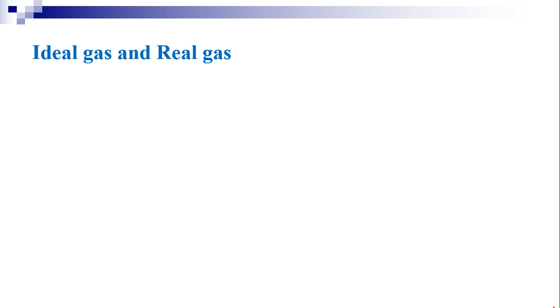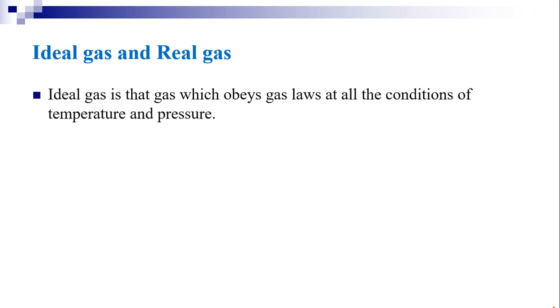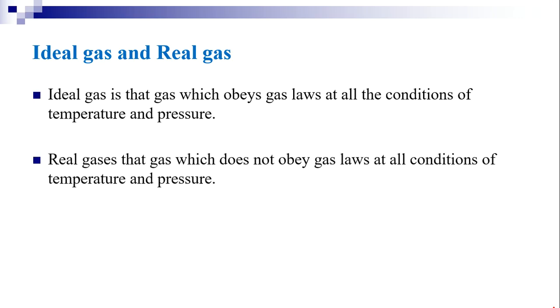In kinetic theory of gases, we have come across the ideal gas and real gas concept. An ideal gas is that gas which obeys gas laws at all conditions of temperature and pressure. But a real gas is that gas which does not obey gas laws at all conditions of temperature and pressure. So there is a restriction for the real gas to obey the ideal gas equation.